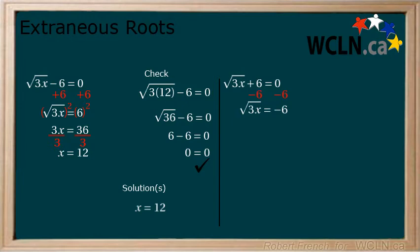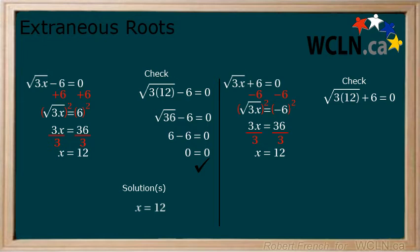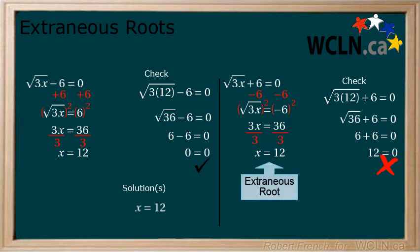Now for the other equation. We subtract 6 from both sides, square both sides, then divide both sides by 3 to get x equals 12 as a possible solution. Now check to see if it is an extraneous root by replacing x equals 12 back into the original equation. 3 times 12 equals 36, the square root of 36 is 6, and 6 plus 6 equals 12. 12 equals 0 is not true. Therefore, this is an extraneous root and this equation has no solution.